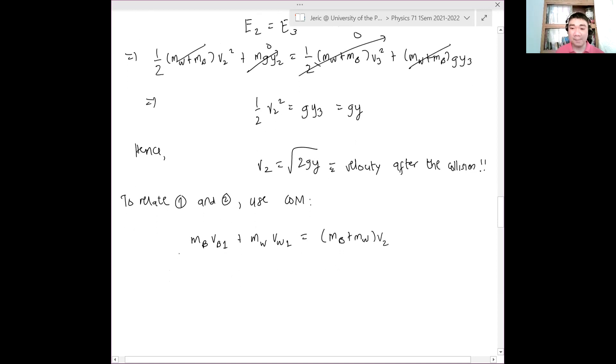Now, what is the initial velocity of the wood? Wood, wood. So the bullet hasn't hit yet. What is the initial velocity of wood? Zero. Zero, of course. So therefore,